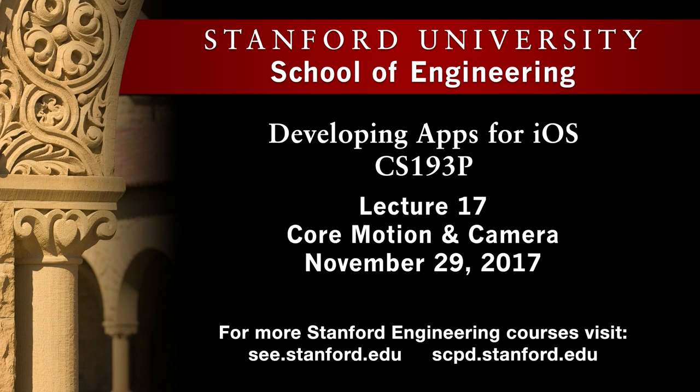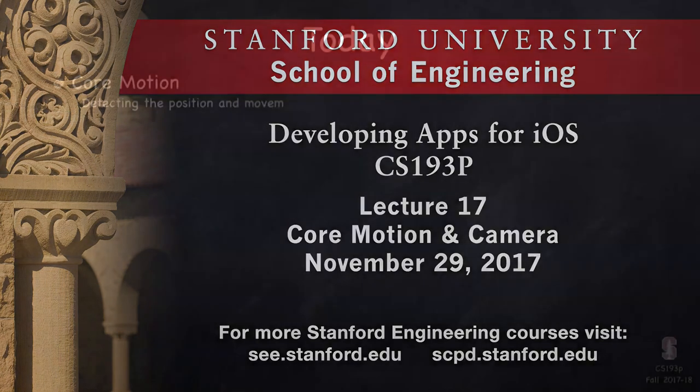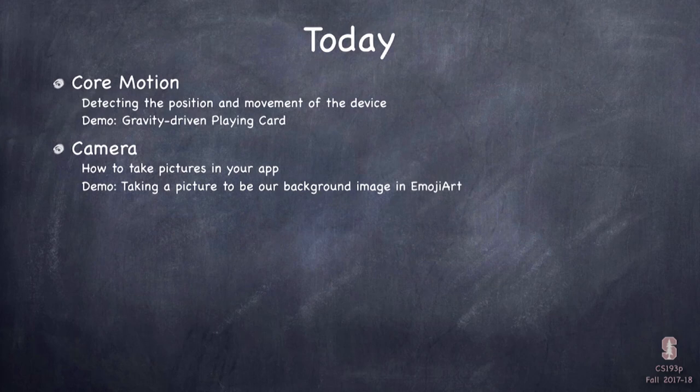Stanford University. Welcome to lecture number 17 of Stanford CS193P, fall of 2017. Today we're going to talk about some hardware-specific APIs — specifically Core Motion, which deals with the position of the device in space as it moves around, and then the camera so we can capture images.